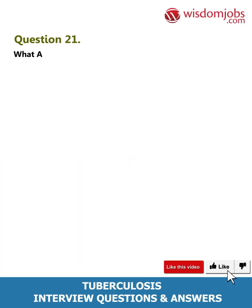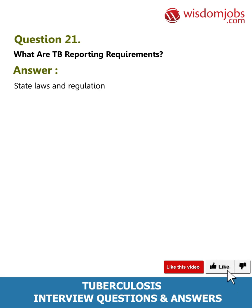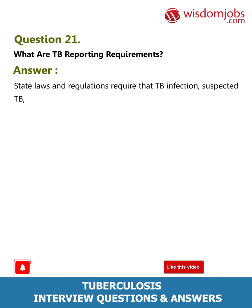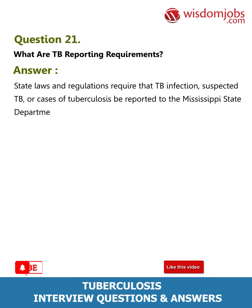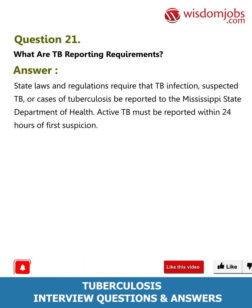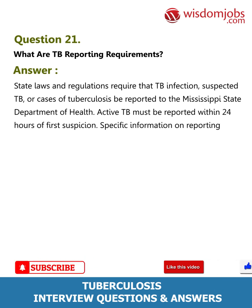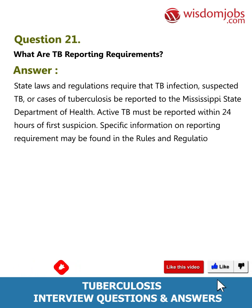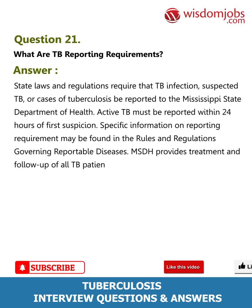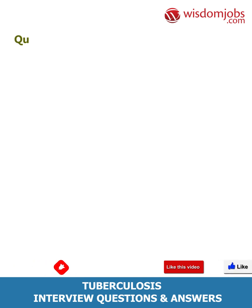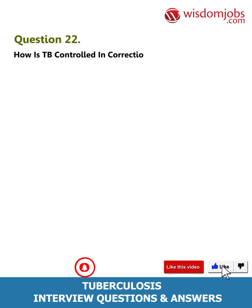Question 21: What are TB reporting requirements? Answer: State laws and regulations require that TB infection, suspected TB, or cases of tuberculosis be reported to the Mississippi State Department of Health. Active TB must be reported within 24 hours of first suspicion. Specific information on reporting requirements may be found in the rules and regulations governing reportable diseases. MSDH provides treatment and follow-up of all TB patients and contacts.